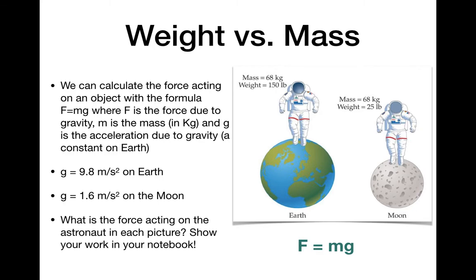If we look at the astronaut in each picture, we have the mass and weight of the astronaut in both images, on the Earth and on the moon. Same mass, 68 kilograms, because the amount of matter in that astronaut is the same, but their weight is quite different. I want you to figure out what the force is acting on these two astronauts with our new formula, F equals mg. The mass is given in the formula and our g value is given here. Pause it, do the two calculations, and we'll check your work in a second.